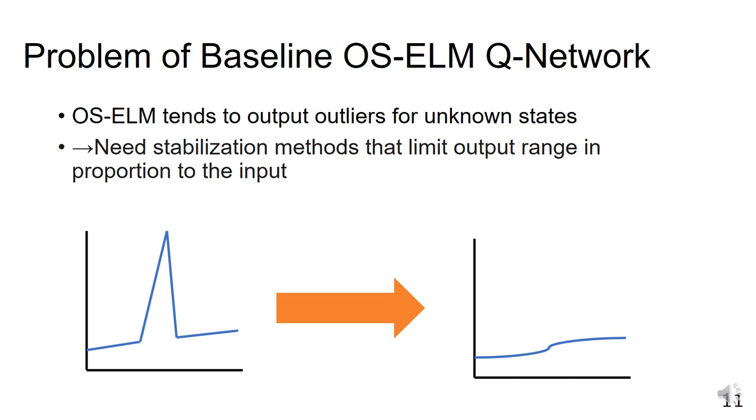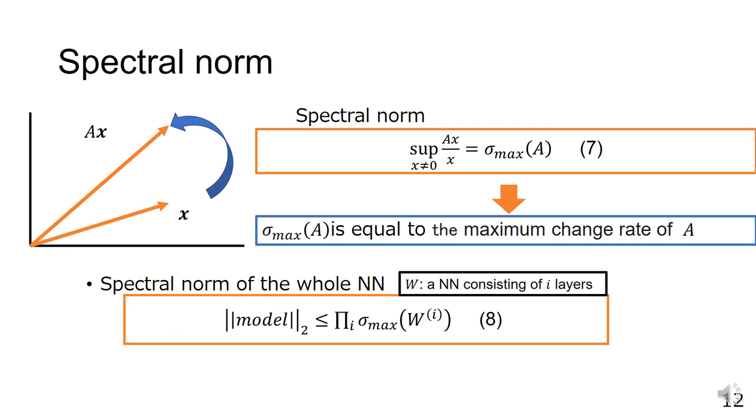In this work, we consider spectral regularization and spectral normalization in order to suppress the output values to a certain range for input data. The spectral norm is the rate of change when a vector is applied to a matrix. This is equal to the maximum singular value of the matrix.